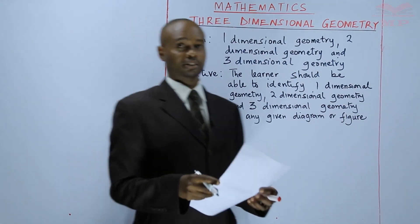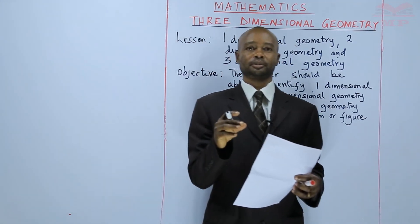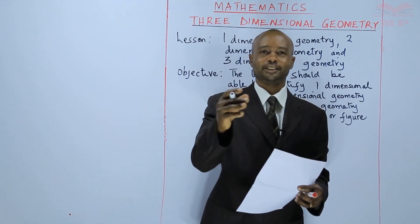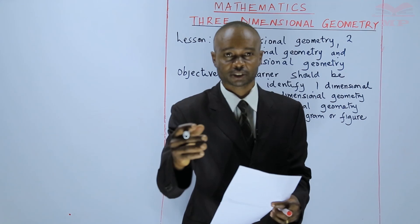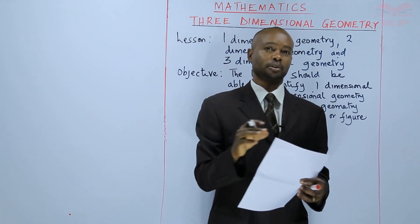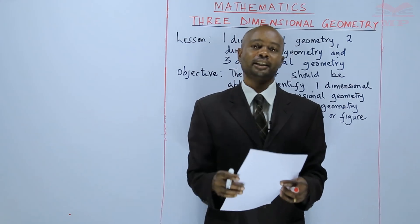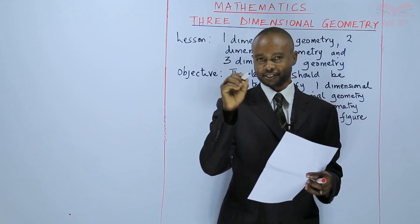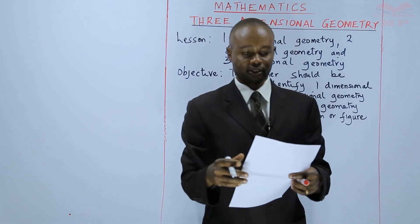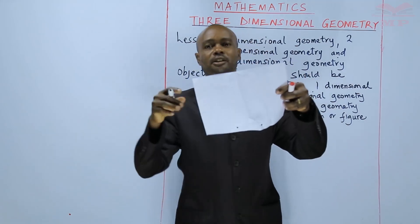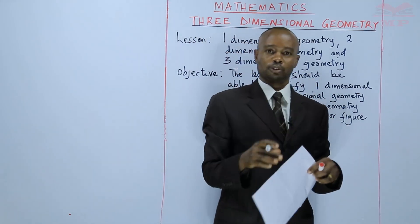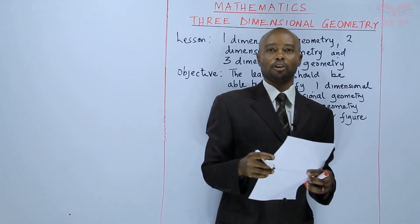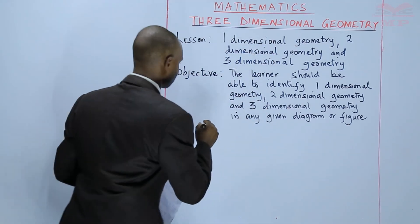The learner should be able to identify that. When you wake up every morning you see things. When you talk of one-dimensional, two-dimensional, and three-dimensional geometry it is a description, and you only describe after seeing. In our last topic we found out when you have a dot, because when you create things like this paper, you start with a point then you move to create one-dimensional, two-dimensional, or three-dimensional geometry.